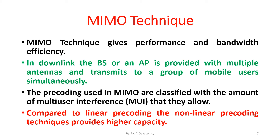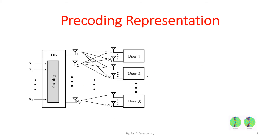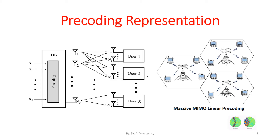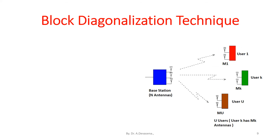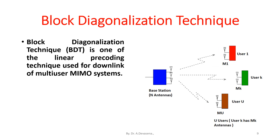Compared to linear pre-coding, the non-linear pre-coding techniques provide higher capacity. Here is a representation of pre-coding in massive MIMO. Block Diagonalization (BD) technique is one of the linear pre-coding techniques used for the downlink of multi-user MIMO systems.